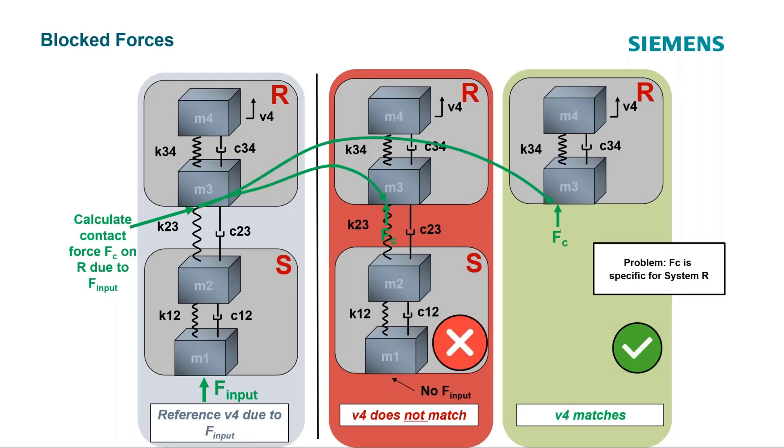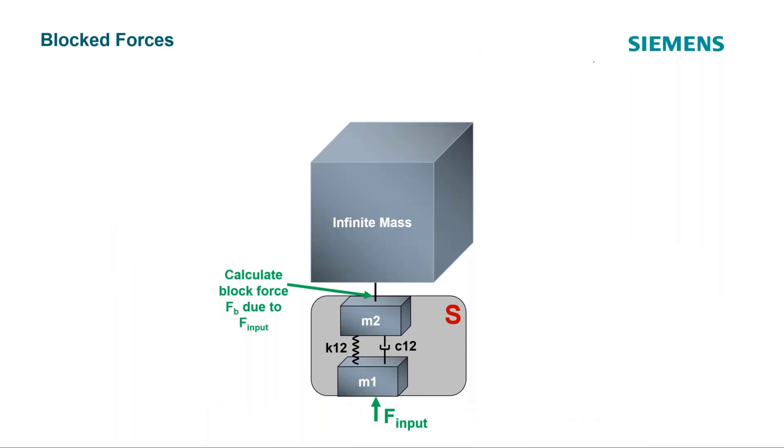But a blocked force, it's going to look like this. You put this total constraint. You cannot move whatsoever here. Zero displacement, infinite mass, infinite stiffness, or whatever it is, theoretically. That force at the interface, due to this F input, is called a blocked force. It has that FB there.